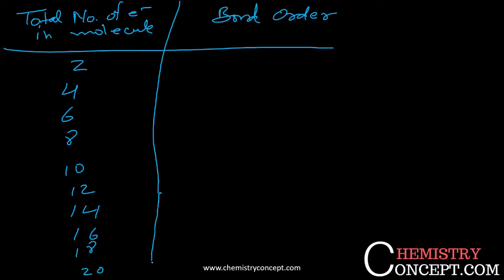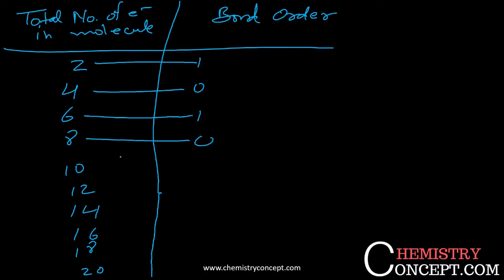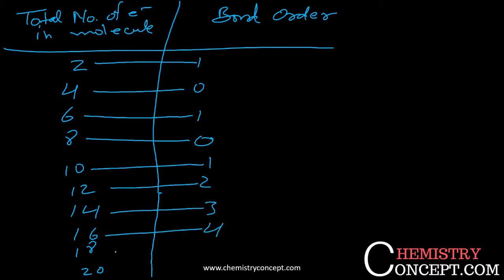The table lists total electrons as 2, 4, 6, 8, 10, 12, 14, 16, 18, 20 with respective bond orders of 1, 0, 1, 0, 1, 2, 3, 2, 1, 0. You can remember the pattern as: 1, 0, 1, 0, 1, 2, 3, then decreasing: 3, 2, 1, 0.